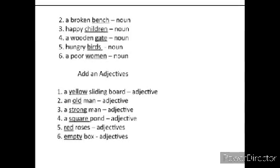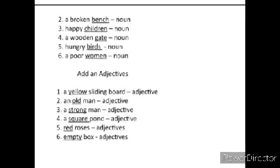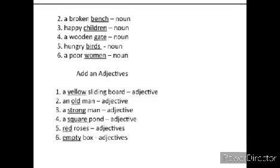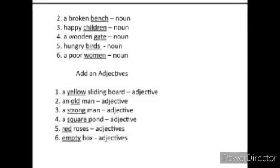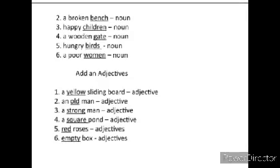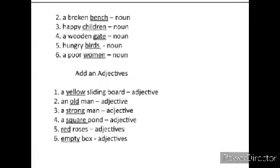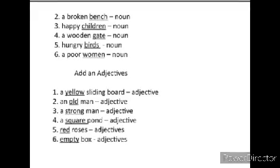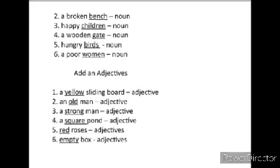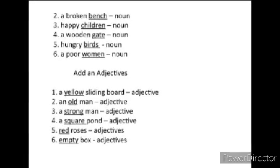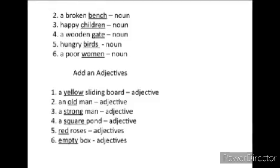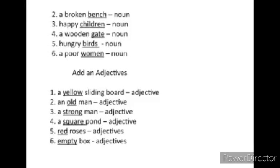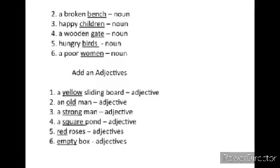Add an adjective. One: a yellow sliding board – yellow is the adjective. An old man – old is the adjective. A strong man – strong is the adjective. A square pond – square is the adjective. Red roses – red is the adjective. Empty box – empty is the adjective.